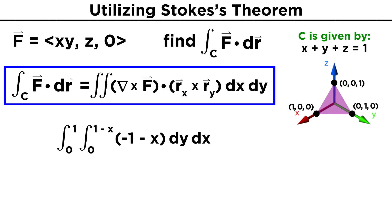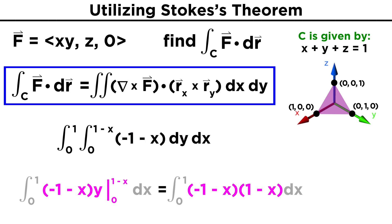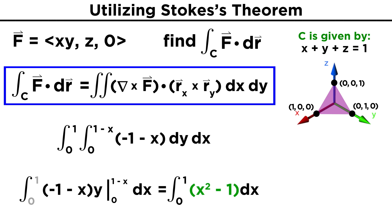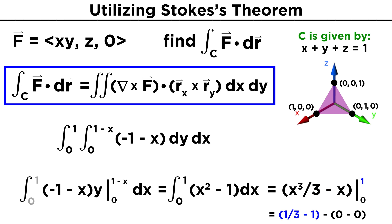Now our integral is completely set up and we can easily evaluate it. Integrating over Y, we see that there is no current dependence on the variable, so the antiderivative is negative (one minus X) times Y, which runs from zero to one minus X. Plugging in the upper bound, we get the integral of negative (one minus X) times (one minus X) dX. Multiplying these binomials, we get the integral of (X squared minus one) dX. Taking the antiderivative gives us X cubed over three minus X, where X runs from zero to one. Plugging in these values gives us (one-third minus one) minus (zero minus zero), which is simply negative two-thirds.